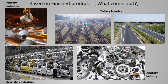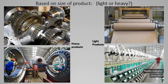Ancillary industries are very important — they help in production of spare parts needed for primary, secondary, and tertiary industries. Based on the size or weight of the product, industries can be heavy or light. Heavy industries include machines and large structures, while light industries include cloth, textiles, paper, and cardboard products.